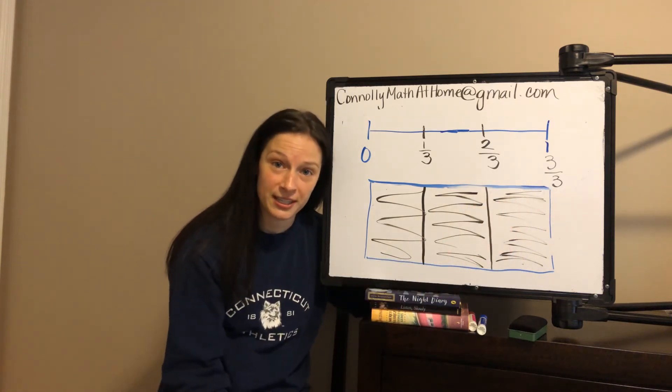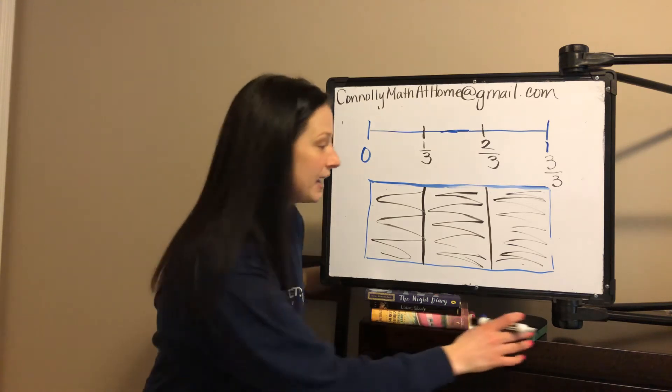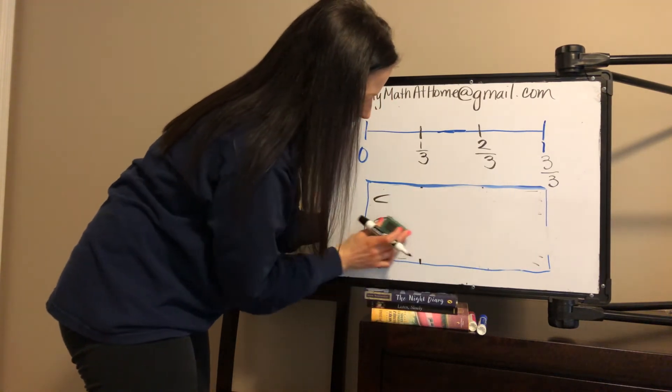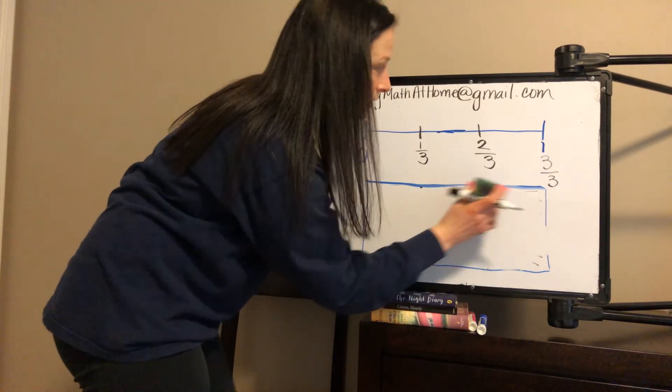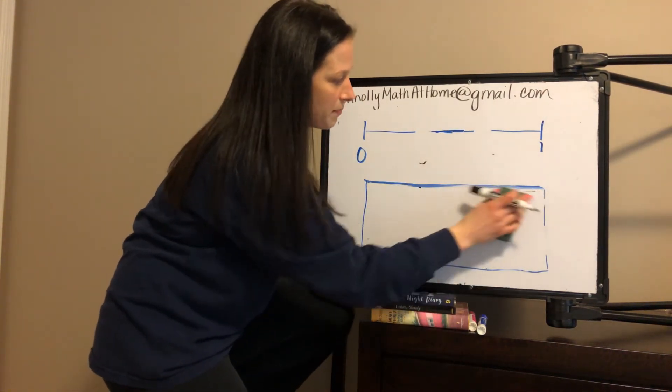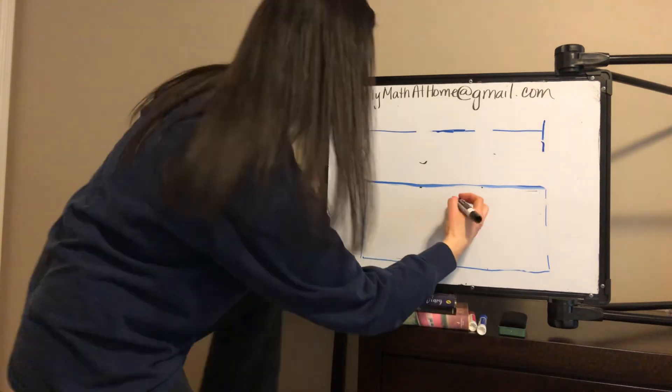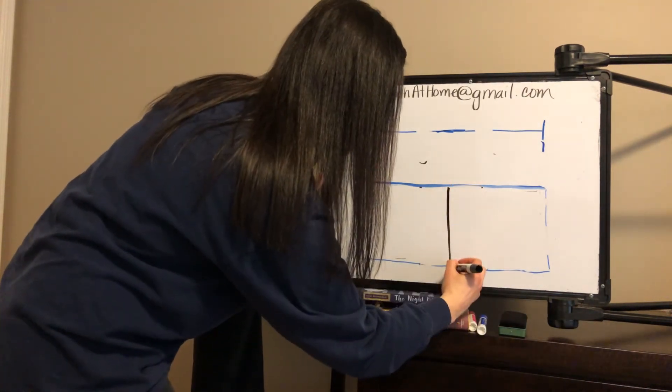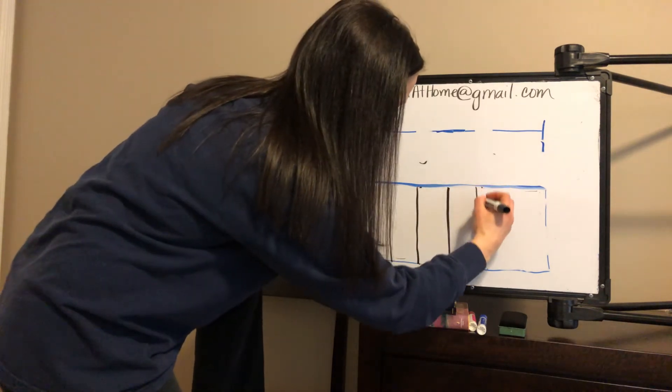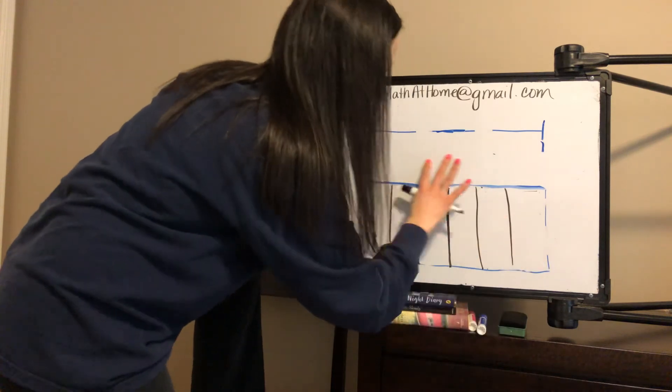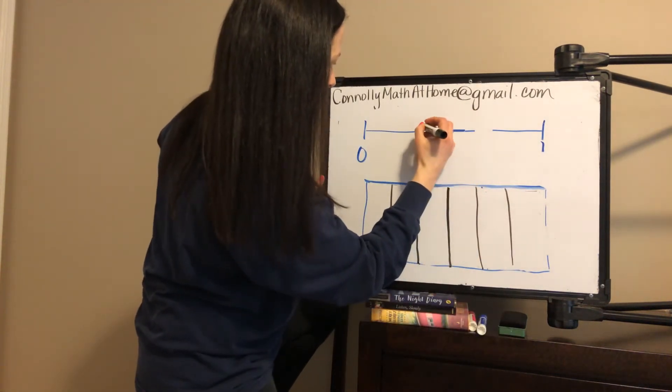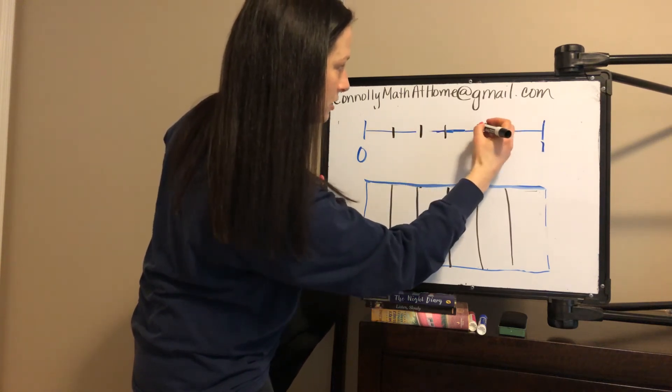I think you might be starting to get the hang of it. Let's look at one more, and then we'll talk about what we notice about a whole. Then we're going to go above a whole. This time, let's talk about sixths. I'm doing sixths this way on the area model, so it can help me on my number line.